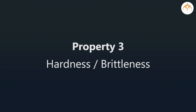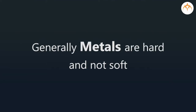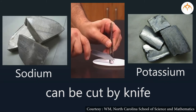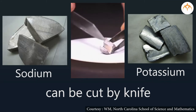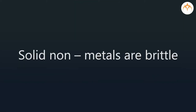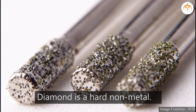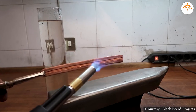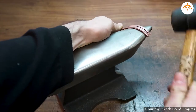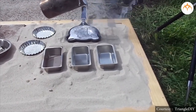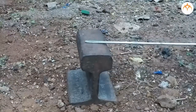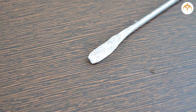Hardness or brittleness: Generally, metals are hard and not soft. Exception — sodium and potassium, which are soft and can be cut by a knife. Solid non-metals are brittle. Some are soft, but diamond is an exception — diamond is the hardest natural substance. Even glass can be cut by diamond. Iron is the hardest metal. If copper wire is heated, we can change its shape. If aluminium is heated, it will melt. At room temperature, we can easily change the shape of an aluminium rod by hammering.